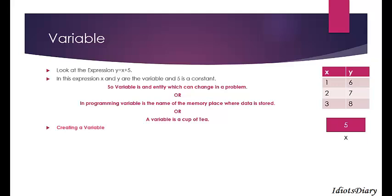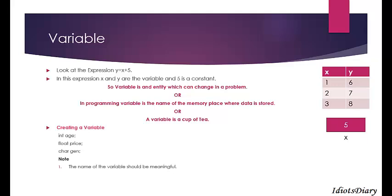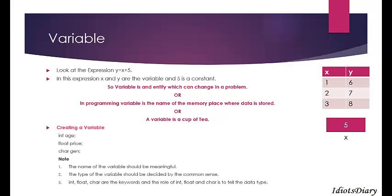Next, we will discuss how to create a variable in C. To create an integer variable 'age', you write 'int age'. To create a float variable 'price', you write 'float price'. To create a character variable 'gender', you write 'char gender'. Note that variable names should be meaningful, as it is easier to identify them when your program becomes thousands of lines long. The type of a variable can be judged by common sense, and here int, float, and char are keywords that indicate the data type.